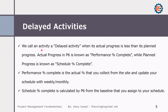We can call an activity a delayed activity when its actual progress is less than its planned progress. Actual progress in P6 is known as performance percentage completed, while planned progress is known as schedule percentage completed. Performance percentage completed is the actual percentage that you collect from the site and update your schedule on a weekly or monthly basis. Schedule percentage completed is calculated by P6 from the baseline that you assigned to your schedule.